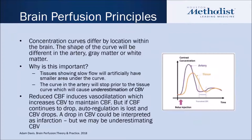The concentration curves can differ by location. The shape of the curve is going to be different in an artery, in gray matter, and in white matter. Tissues that show slow flow will artificially have a smaller area under the curve — because arterial flow sends blood into the capillary vessels, which is what you're looking at within the tissue flow. Because of this, you can really underestimate cerebral blood volume. Reduced cerebral blood flow induces vasodilation — a natural process of autoregulation within the brain.